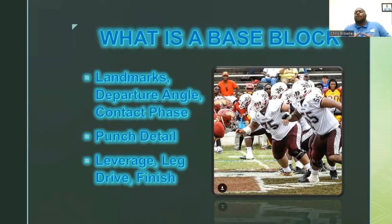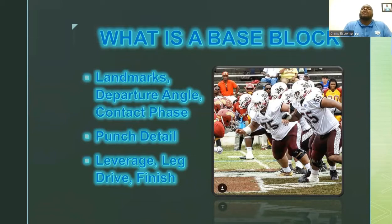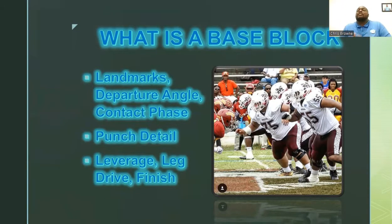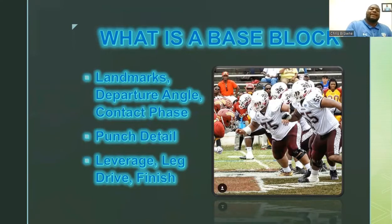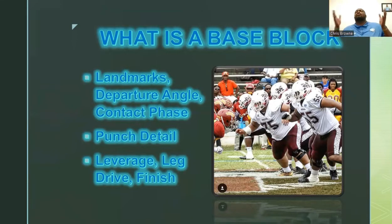I want to teach landmarks so these guys know what their landmarks are. The base landmark — if I'm a left guard with a type three technique — is the inside V of the neck, as far as where I want my hat placement to be. For steps, we go by departure angle, which is our first step, where we get our hip in phase with the direction of the block. That's a short three-inch step, big toe on pinky toe. My contact phase is my second step, getting on the inside foot of that defender — big toe, pinky toe, second step, inside foot — when executing a base block, inside zone, or duo mono-e-mono block.